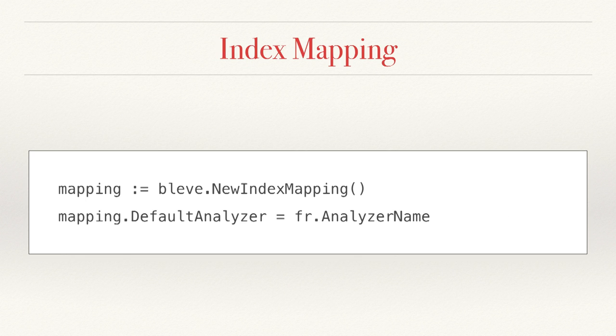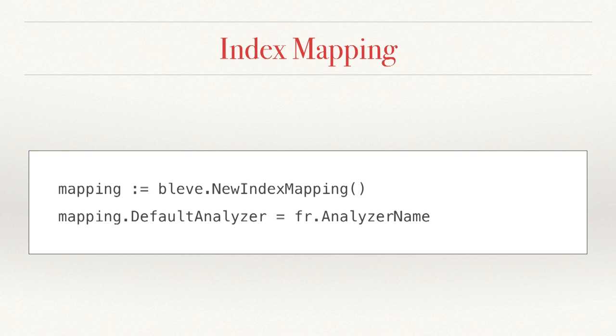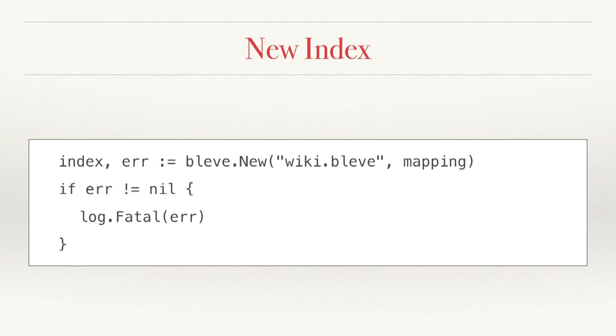Now the next step is we're going to create what we call an index mapping. The index mapping describes how we take your documents and put them into the index. Many times you can use the default mapping, which is what we create on the first line. But we're going to do one other thing — we're going to set the default analyzer. This is basically saying, unless I tell you anything else, assume the text is in French. Now that we've done that, we can go ahead and create the index. This takes two arguments: the first is the path, which we're just going to call wiki.blovie, and then the mapping that we created on the previous slide.